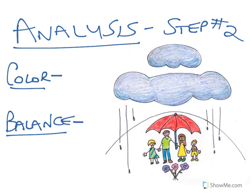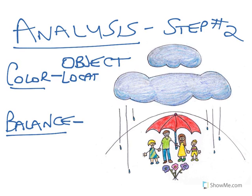Color is the most important element used to communicate an idea in this artwork. The most important use of color to me is the red umbrella, which is located slightly above center. In my analysis, I've stated what the object is and its location in the work, so that anyone looking at it could pick it out.